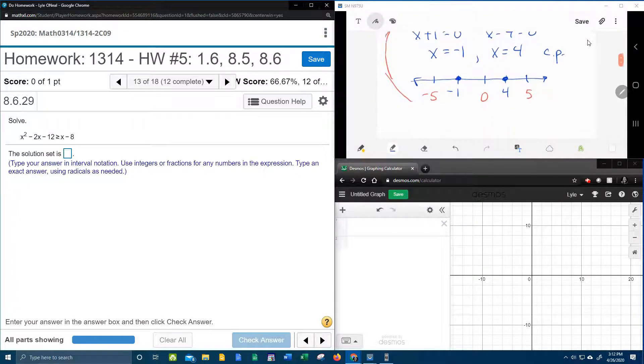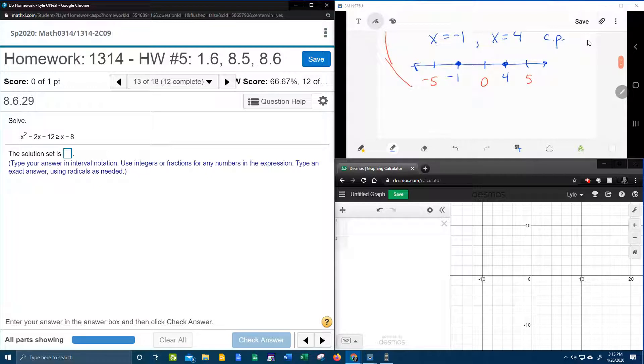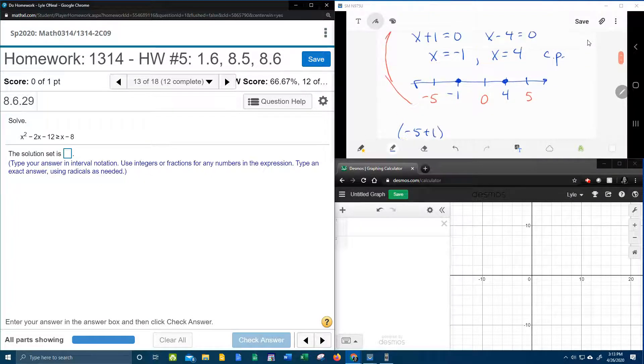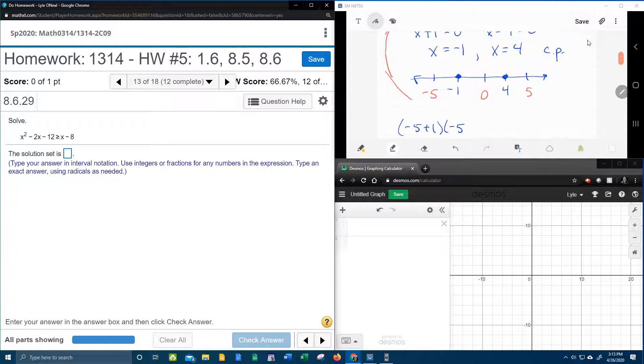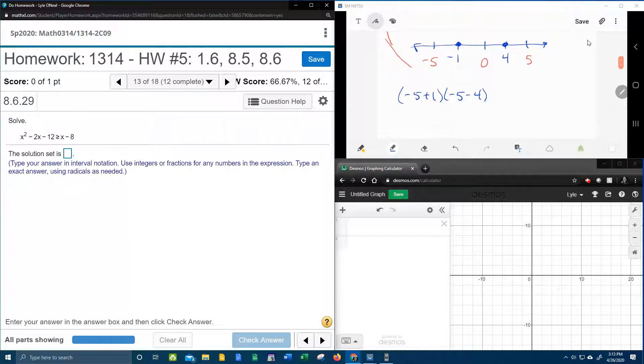So here we go with the negative 5 first. Plugging in negative 5 for x. Negative 5 plus 1 times negative 5 minus 4. We want to know is that greater than or equal to 0. So negative 5 plus 1 is negative 4.